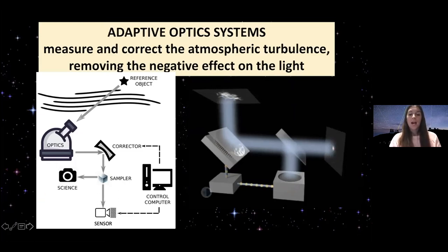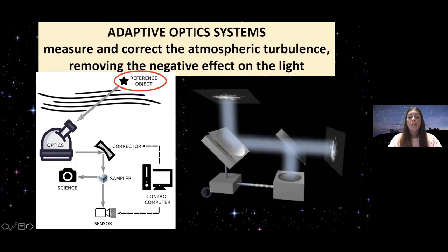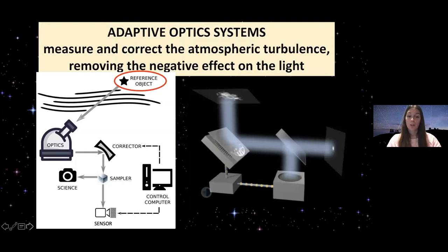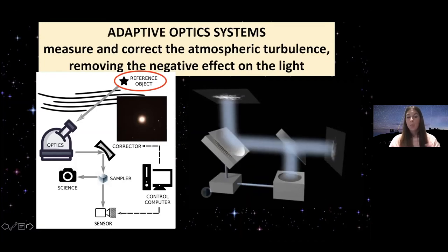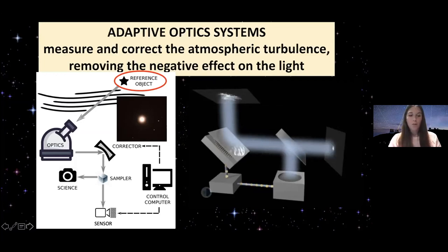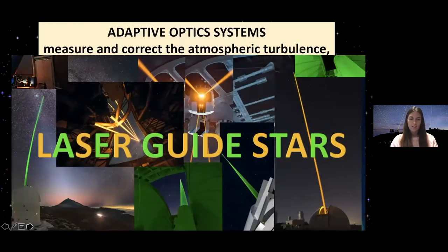In order to do this, our wavefront sensor needs a reference object on the sky. This reference object can be the object we are observing, but usually this object is not bright enough. So we need to use another object close to it whose light we can use with the wavefront sensor. We could use a natural star, but believe it or not, there are not enough bright stars in the sky. So why worry about that if we can actually create our own stars? Let's generate some stars up there wherever we want — this is why we use laser guide stars.